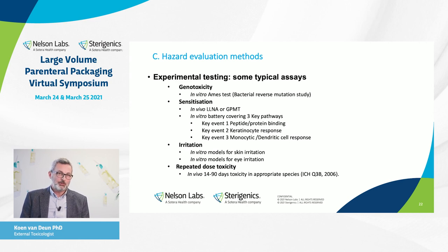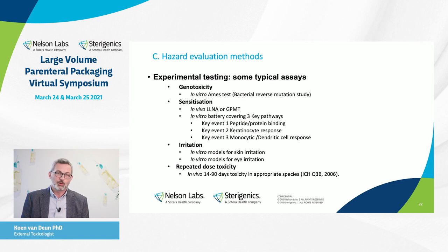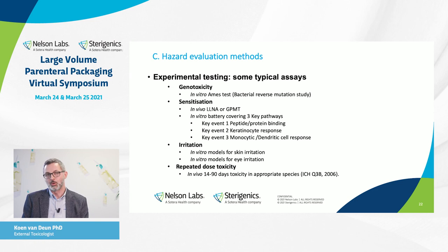Finally, if read-across is not possible, testing may still be needed. For genotoxicity, there is the Ames test. For sensitization, testing can be done with an in vivo test or nowadays also with an in vitro battery, using different key pathways to come to a comparable result. There are in vitro models for irritation. But for repeated dose toxicity, there is still the need to go to an in vivo study. It is defined in ICH Q3B that under certain circumstances, a two-week up to three-month repeated dose toxicity study is needed, which includes the impurities, extractables, or leachables.